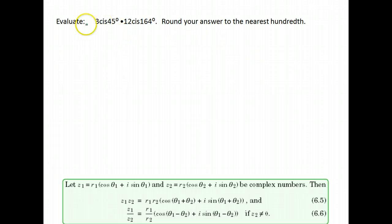Here's another example. Evaluate 3 cis 45 degrees times 12 cis 164. Now remember this cis is just an abbreviation. This would be 3 times, the C stands for cosine of our angle which was 45, plus the is is i sine of our angle 45. That's just the abbreviation they use for complex numbers that are in trigonometric form.